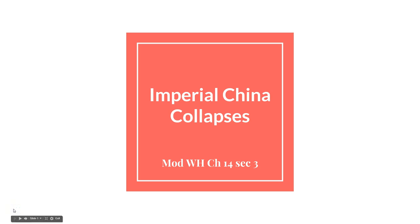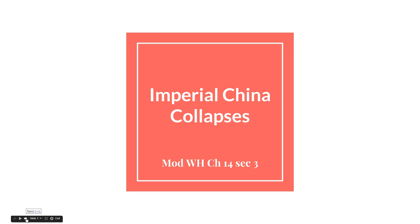Hey, good morning. Welcome to Chapter 14, Section 3: Imperial China Collapses. We are going to kill off the Chinese Empire and throw China into a nasty and prolonged civil war, then an invasion, then back to civil war, all the while going through two world wars. It's going to be fun.